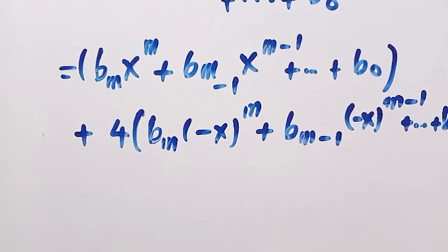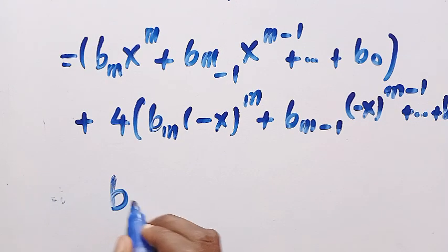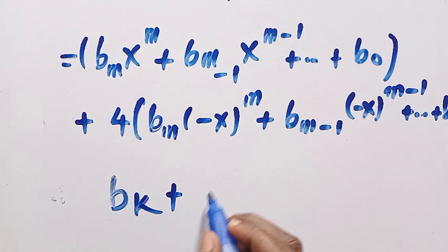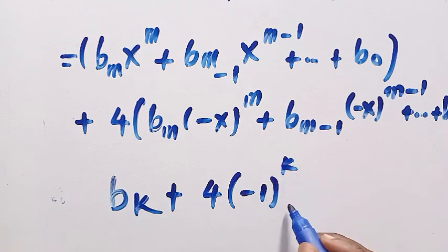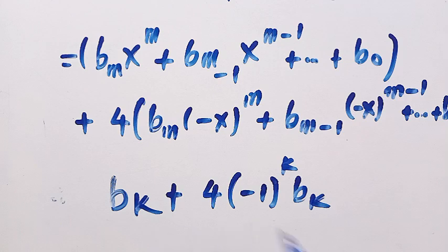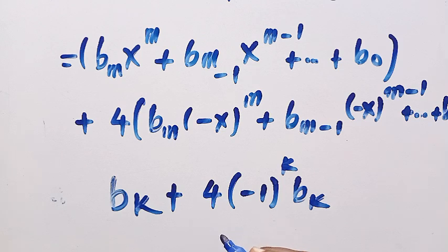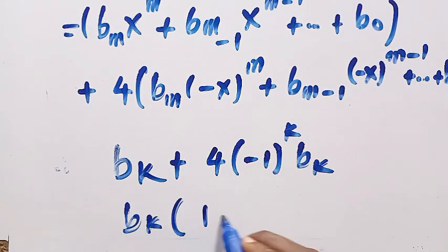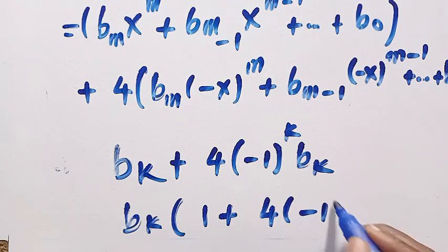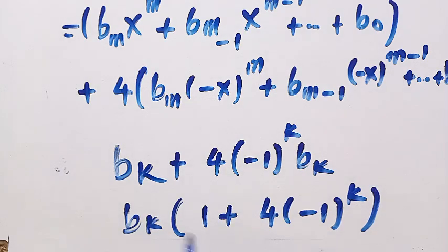For each power k, combining the terms gives bk + 4·(-1)ᵏ·bk. Factoring out bk, we have bk·[1 + 4·(-1)ᵏ]. This must equal the corresponding coefficient of x³ on the right-hand side.